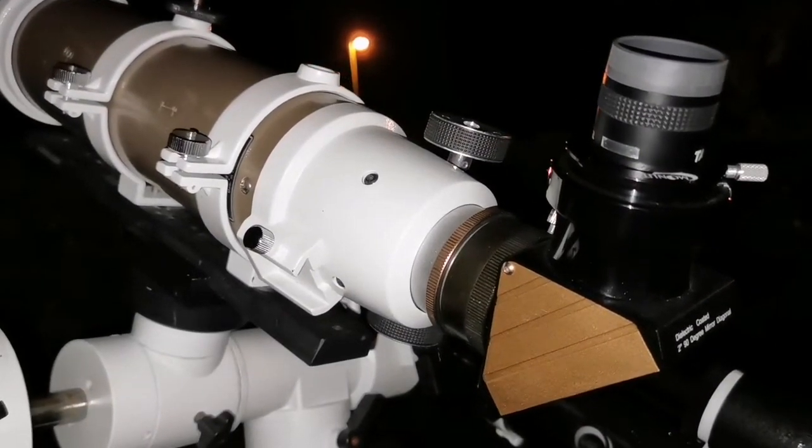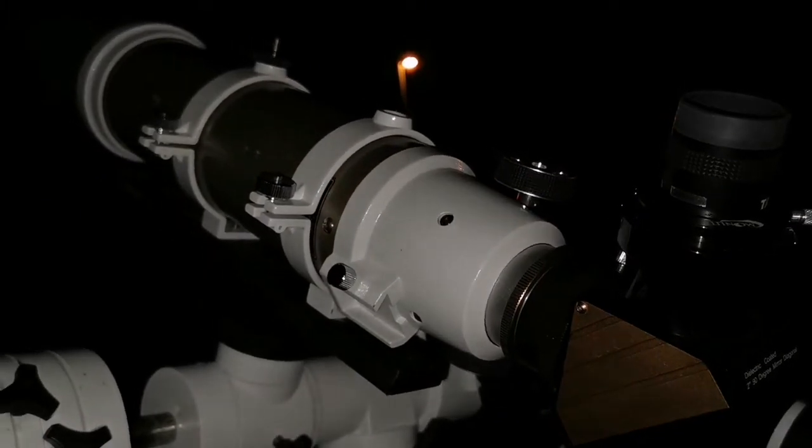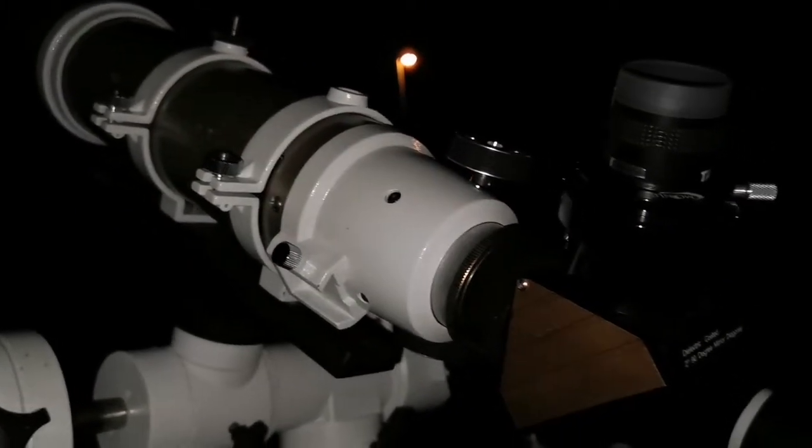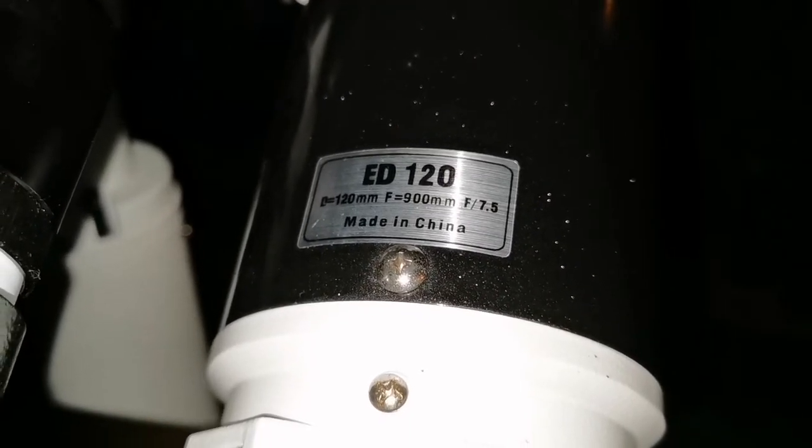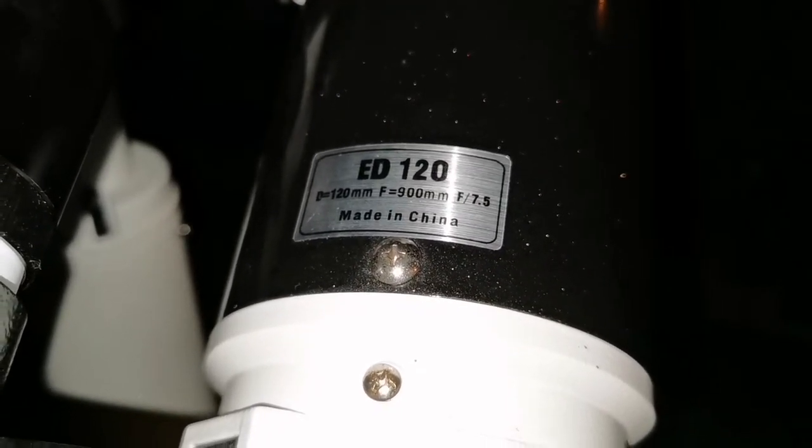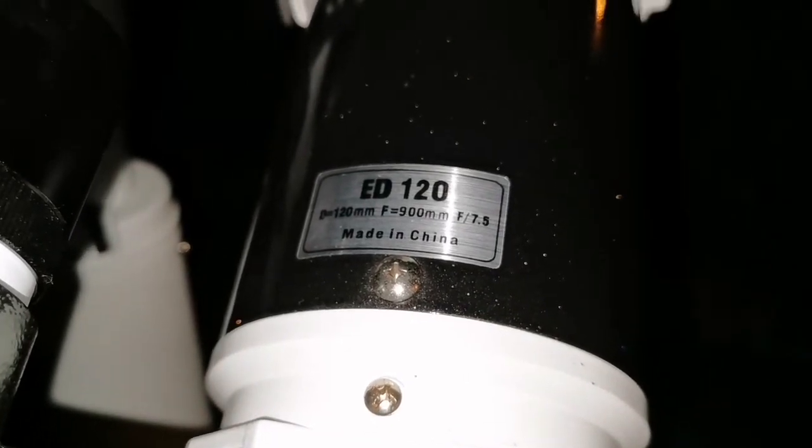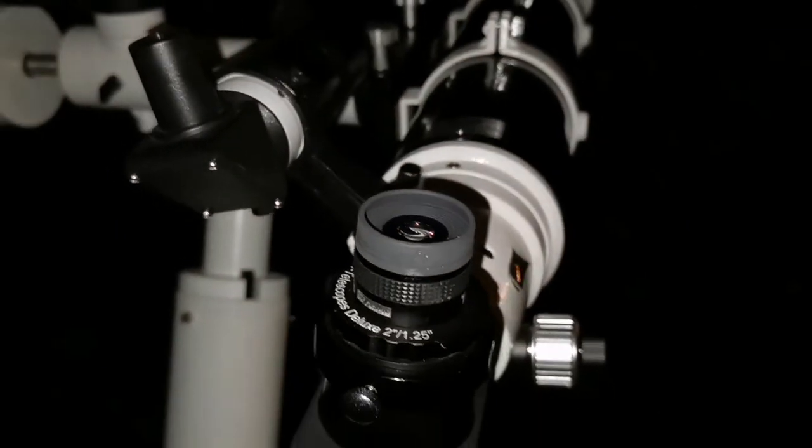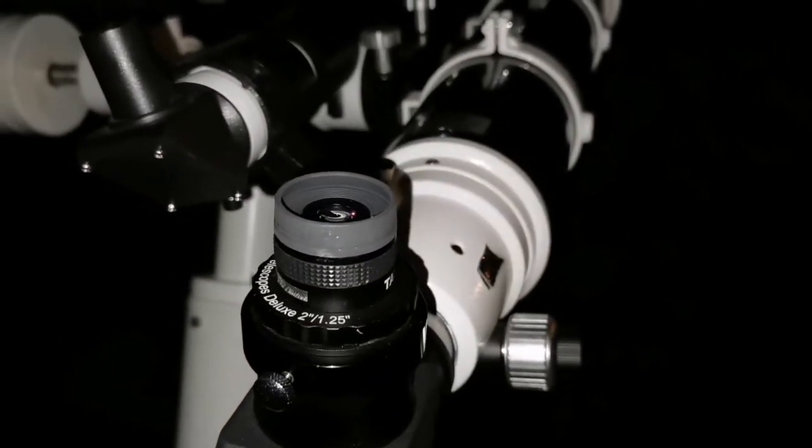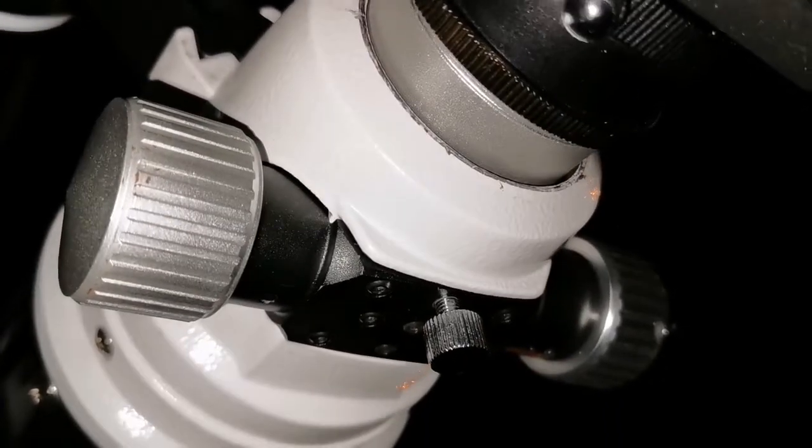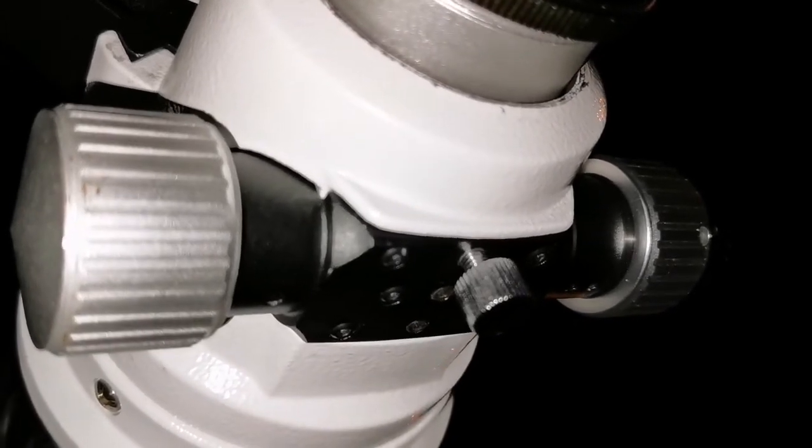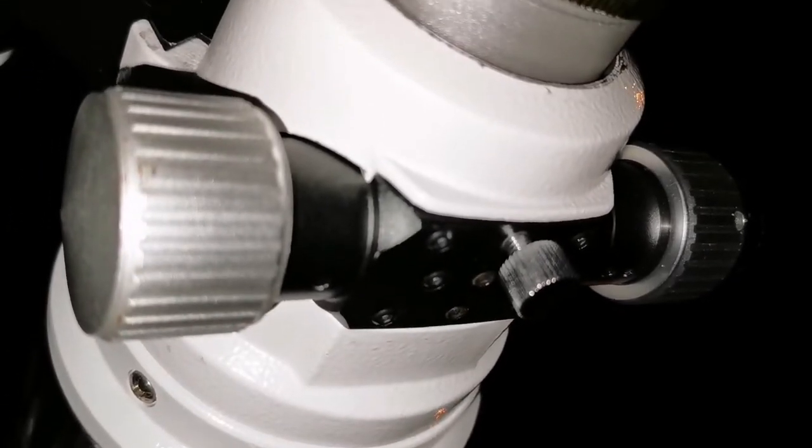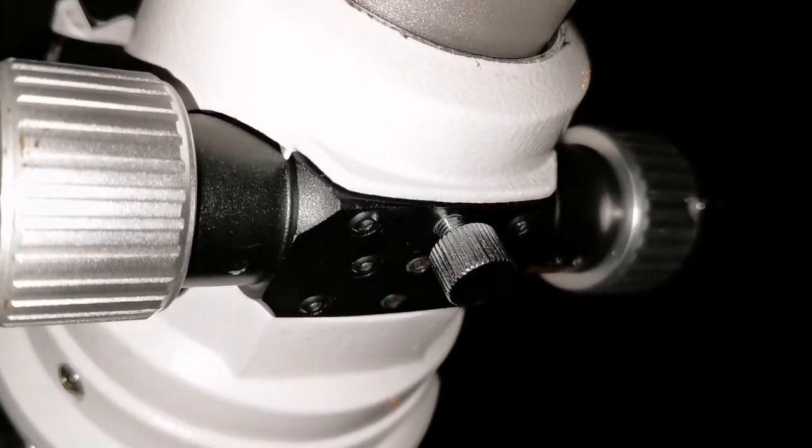The next telescope is a Skywatcher ED120 with f/7.5 focal ratio. It had a really bad problem—it has a dual Crayford focuser that was slipping loose, completely coming down. I tried removing material by filing the contacting metals and added duct tape, but it didn't work well.